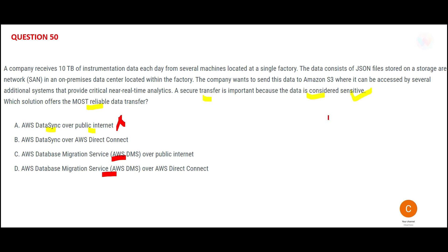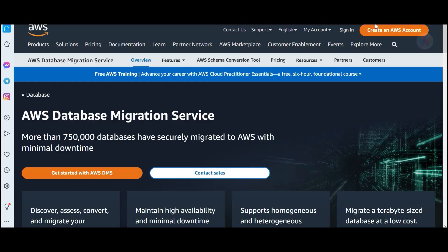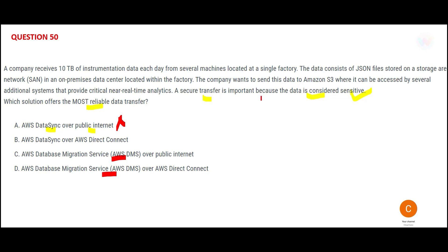Options C and D are purely database migration services. The primary use case of a database migration service is to migrate databases. In our question there is no mention of any database — they are looking to migrate files from on-premises to S3 buckets. That is why both these options are wrong, whether over public internet or Direct Connect.